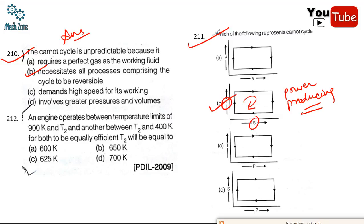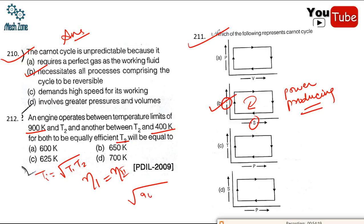An engine operates between temperature limits of 900 K and 400 K. For two engines to be equally efficient, using the formula T_intermediate = √(T1 × T2), the intermediate temperature = √(900 × 400) = √360,000 = 600 K.